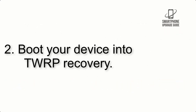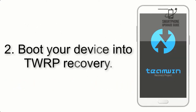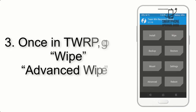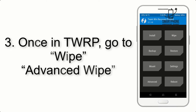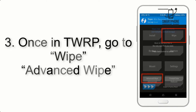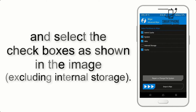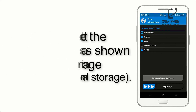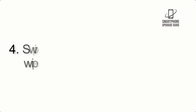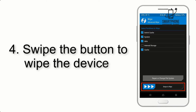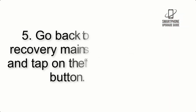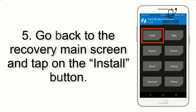Step 2: Boot your device into TWRP recovery. Once in TWRP, click on Wipe, then Advanced Wipe, and select the checkboxes as shown in the image, excluding internal storage. Step 4: Swipe the button to wipe the device.